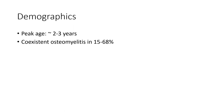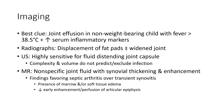Demographics: peak age 2 to 3 years. Coexistence with osteomyelitis in 15 to 68 percent. Best clue is joint effusion and limping or weight-bearing difficulty, combined with fever more than 38.5 Celsius and increased inflammatory markers.